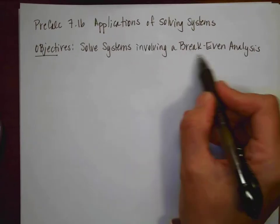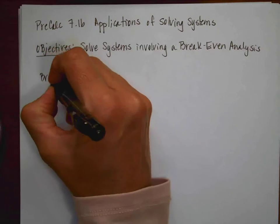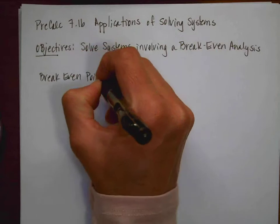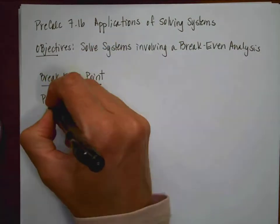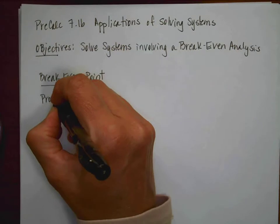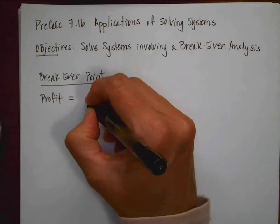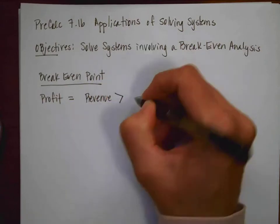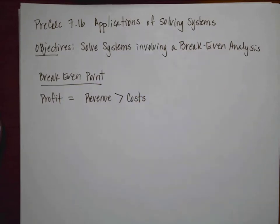Before we talk about this break-even process analysis, let's talk about a break-even point. If I'm going to have a profit from making something or selling something, that is when my revenue is going to be greater than however much it costs me to produce that item.